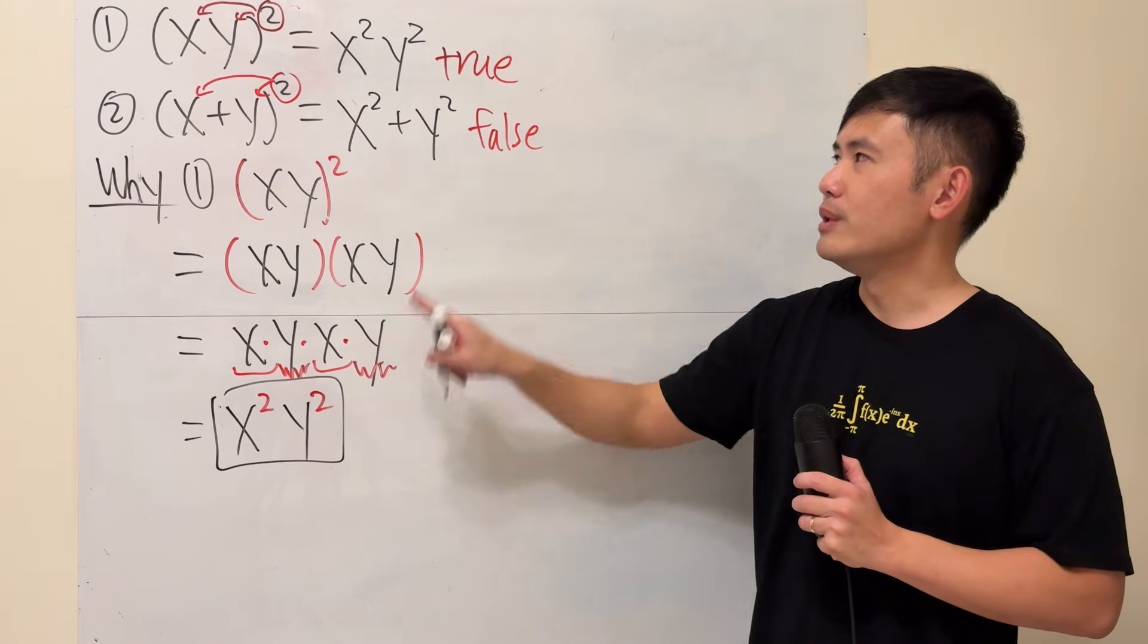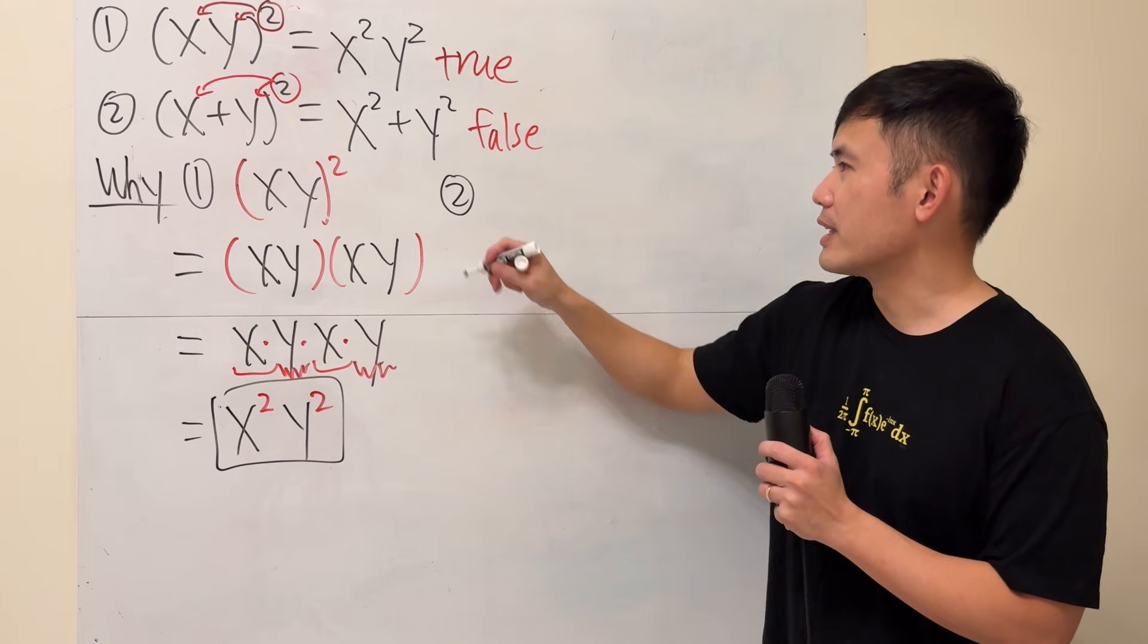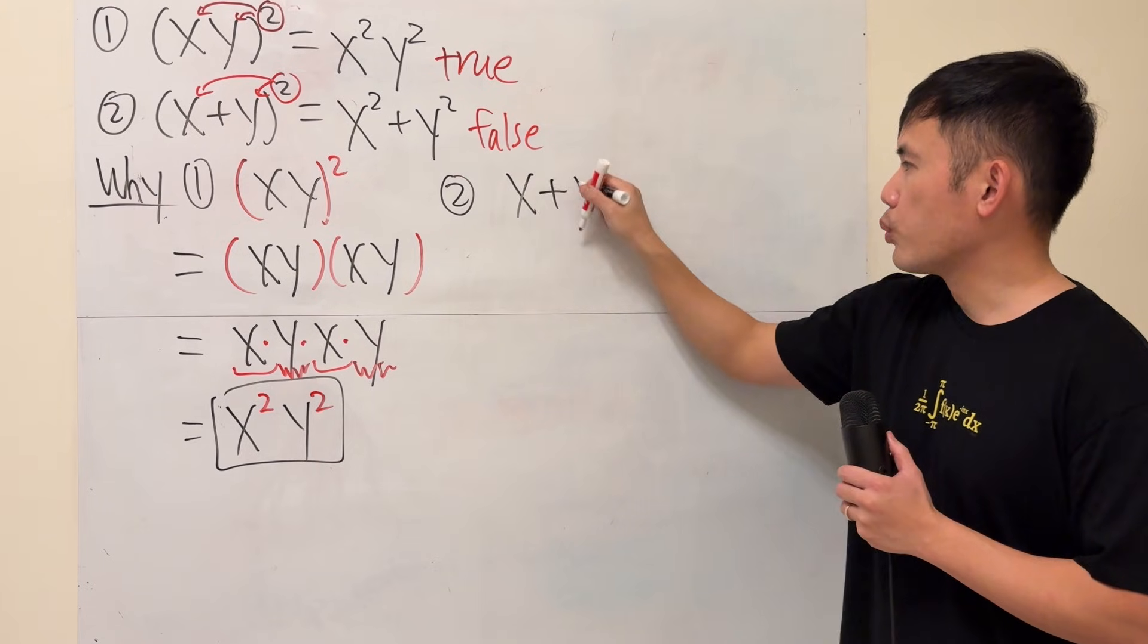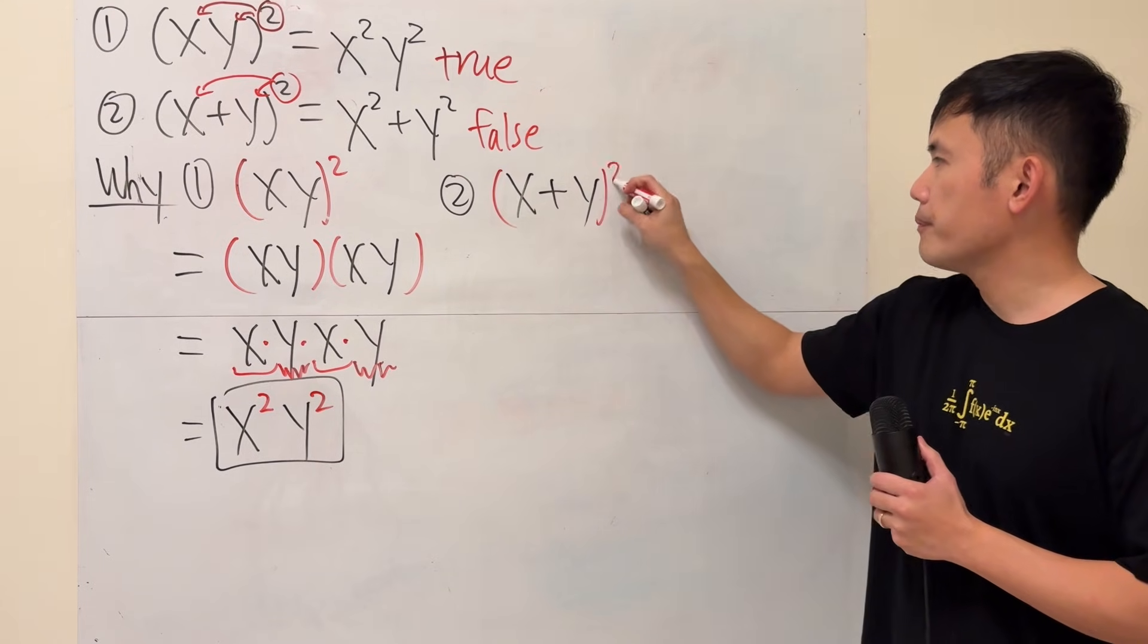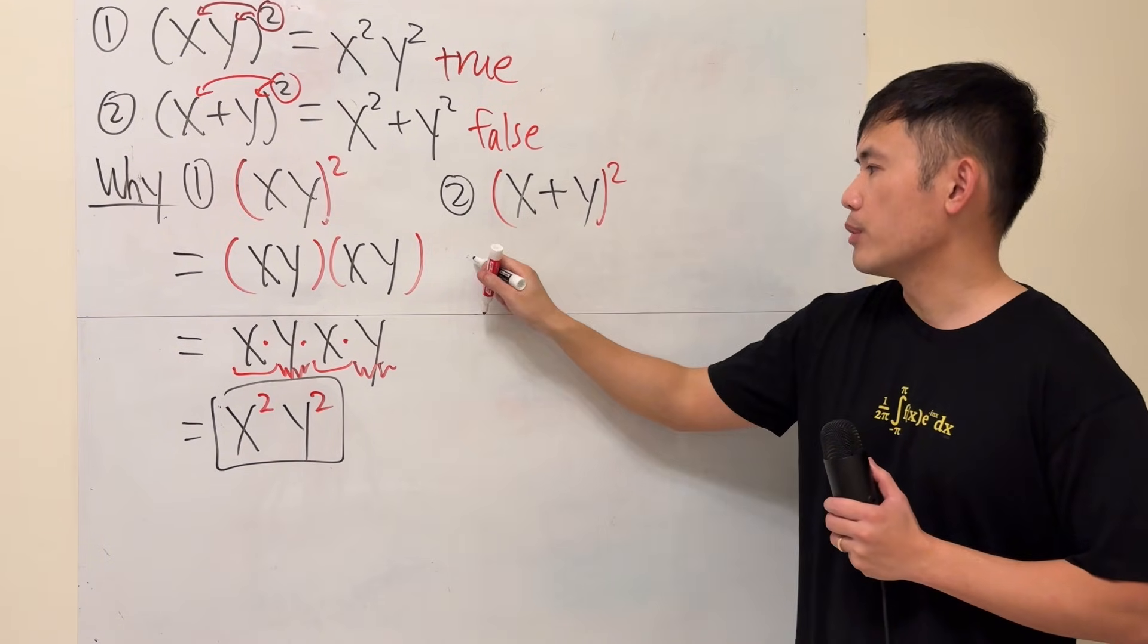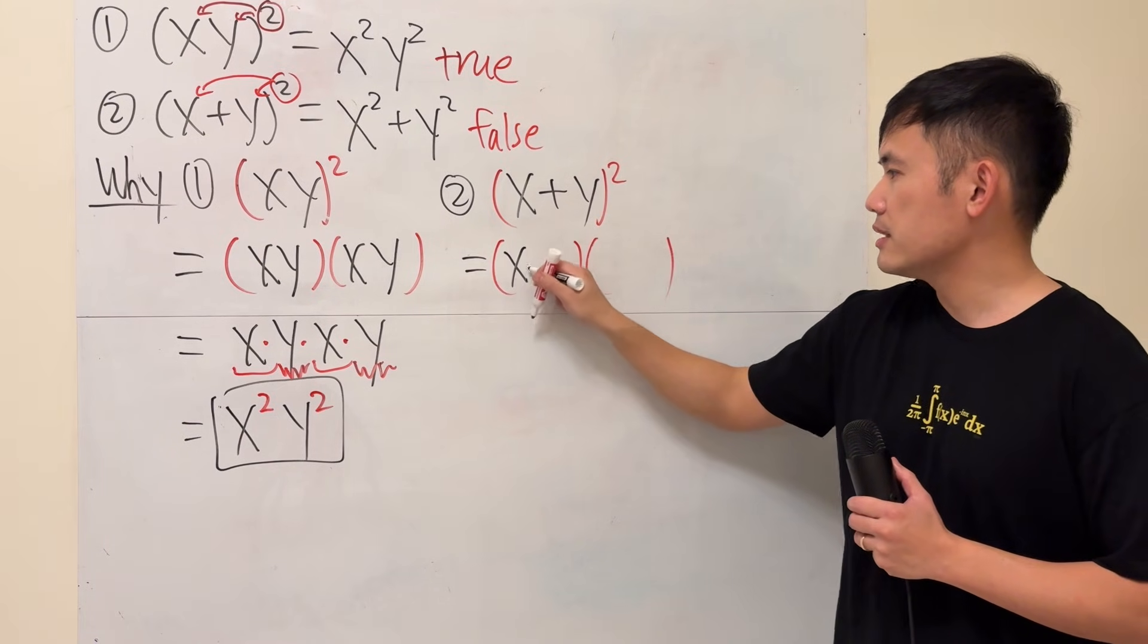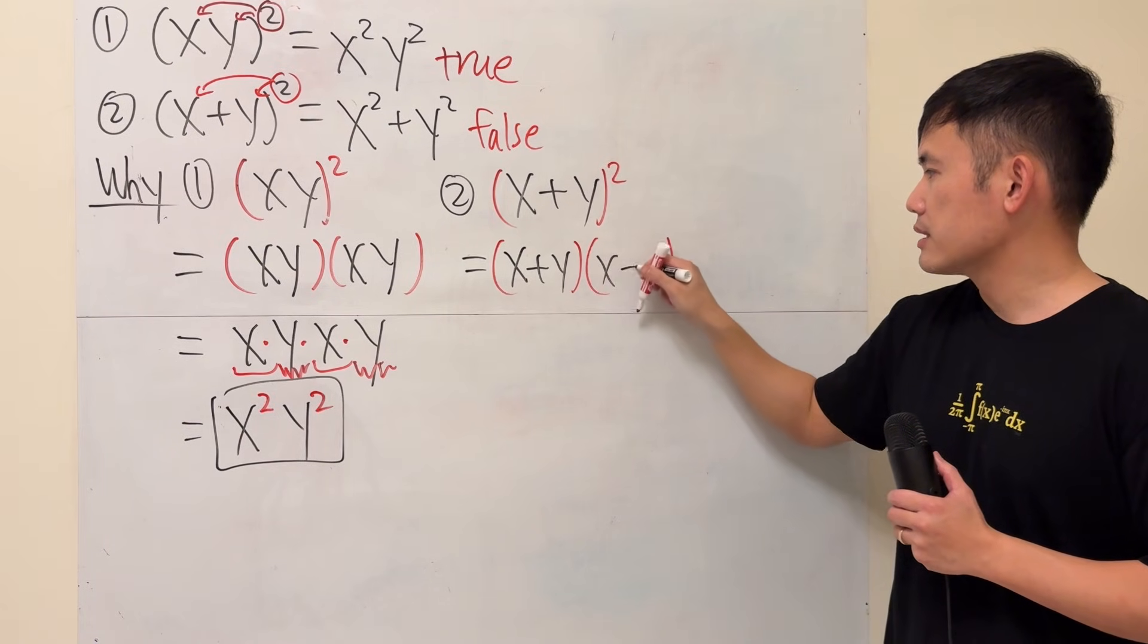This is very, very true. Now, if you try to do the same thing for the second one, x plus y, and then square. Again, the square means that we write down inside twice, and then we have to multiply them. So, still parentheses, and then inside here is x plus y, and then x plus y.